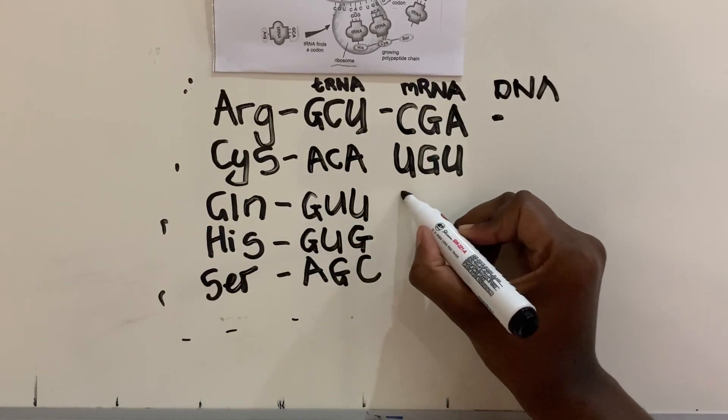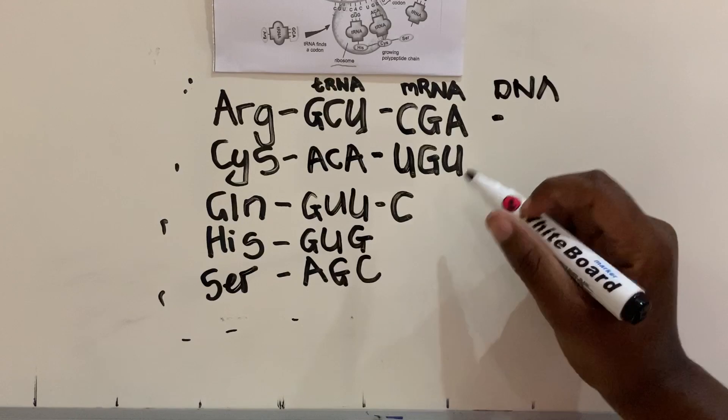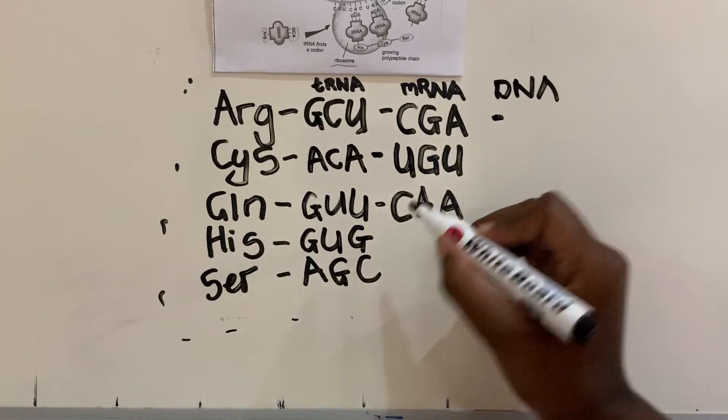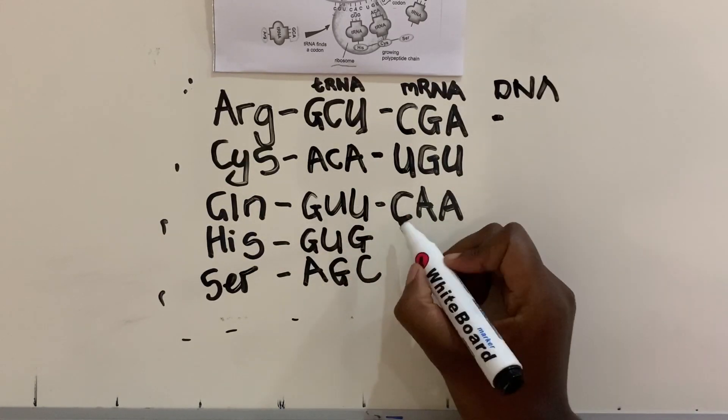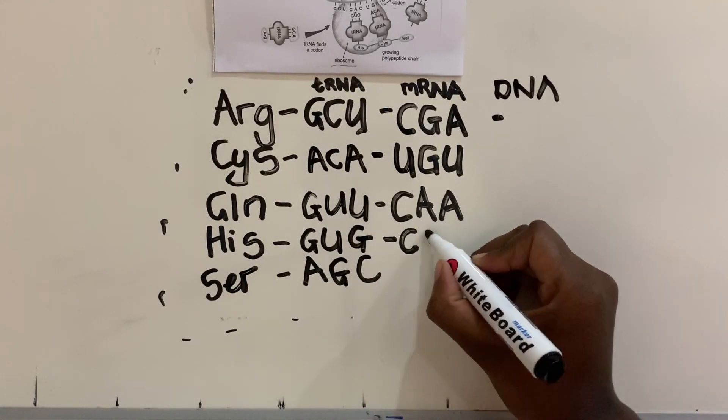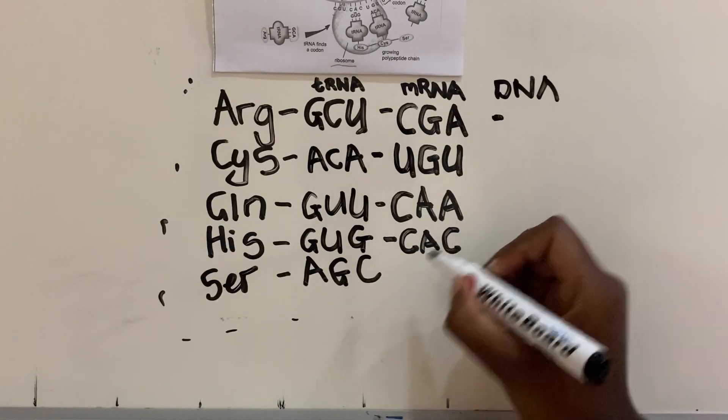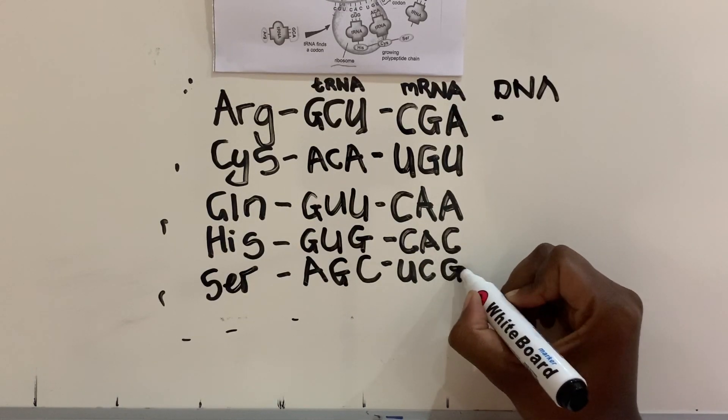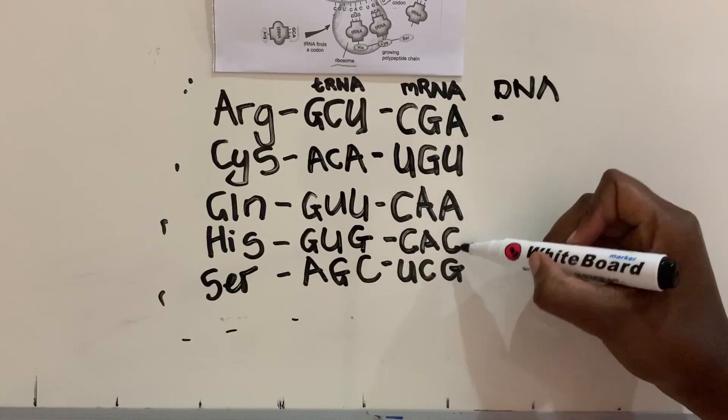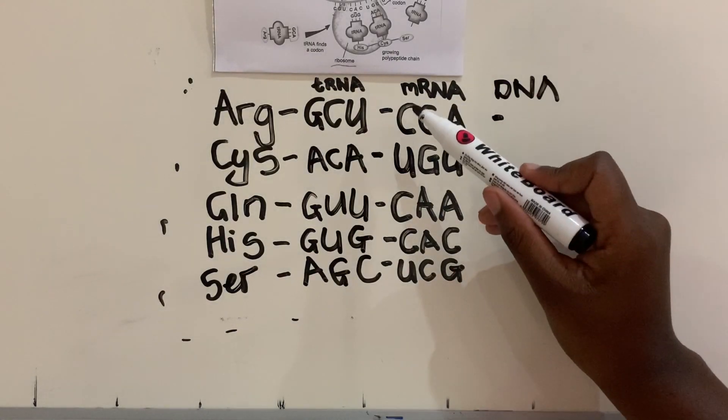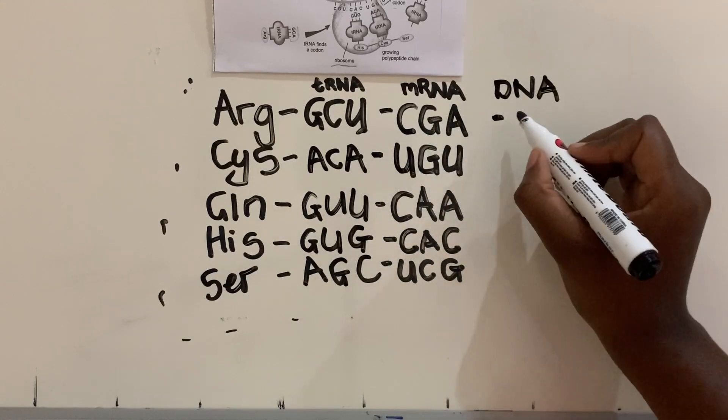This was actually supposed to be in a table, but I don't really like drawing tables. Okay, that's CAA. You see what I did? Went from G to C, U to A, U to A. Same thing here: CAC, UCG. And when you write this out, try and make your Gs and Cs visible so that it's easy for the examiner—I mean for the marker—to see what you're actually writing.